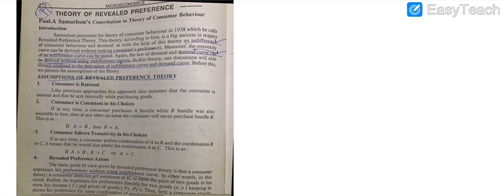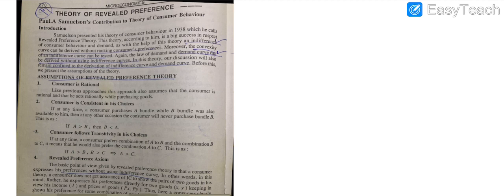Bismillahirrahmanirrahim, Assalamu Alaikum. First of all, users, subscribe to the video for getting the next videos. Today the topic which we are going to start is the Theory of Revealed Preference. The concept was given by Samuelson in 1938. The background of this theory was in the context of indifference curve — to understand the concept of indifference curve, which is a curve providing different combinations of two commodities giving the same level of satisfaction.